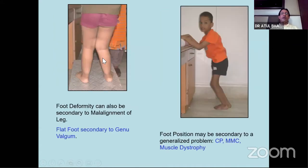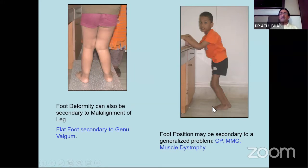Don't forget to look at the leg - sometimes genu valgum may cause a flat foot, so malalignment of the lower limb matters. If you look at the crouch position where the knees are flexed, the hip is flexed, and the ankles are in dorsiflexion - here the gait becomes important. When you look at the child's gait, whether this is a spastic gait, a high stepping gait, or an equinus gait - that's why gait examination is important for foot examination.